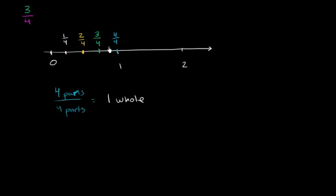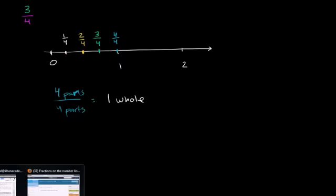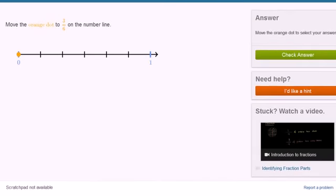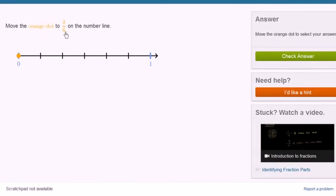So let's do a few exercises with our newfound knowledge of fractions on the number line. So let me get a little exercise going. So here we have move the orange dot to 3 sixths on the number line.